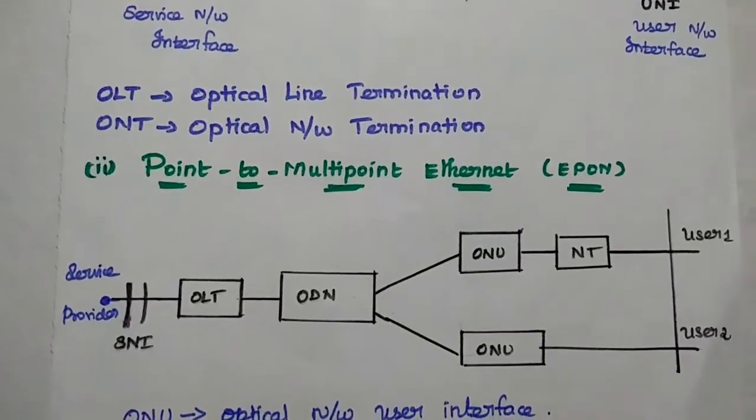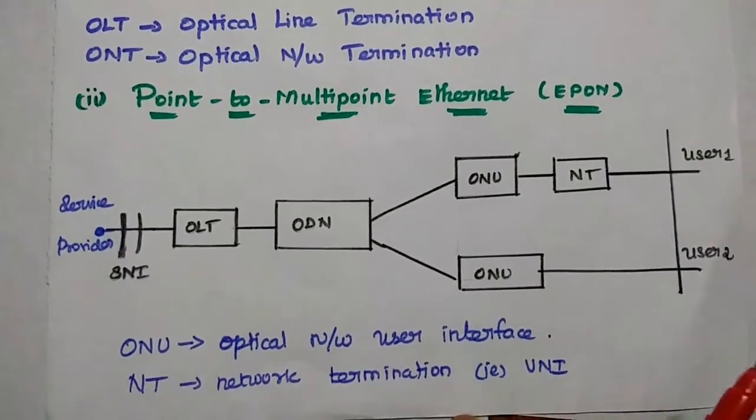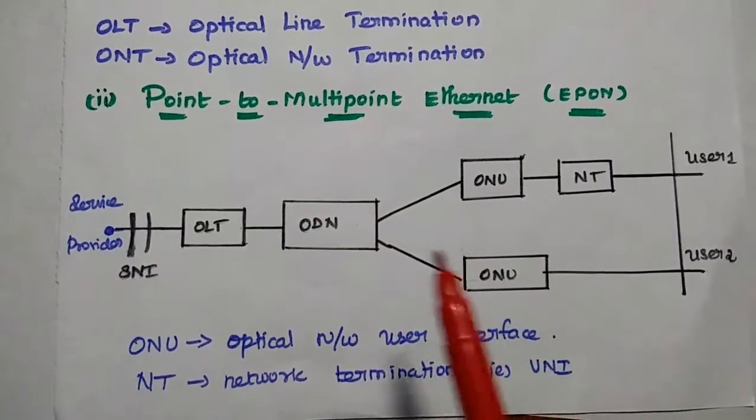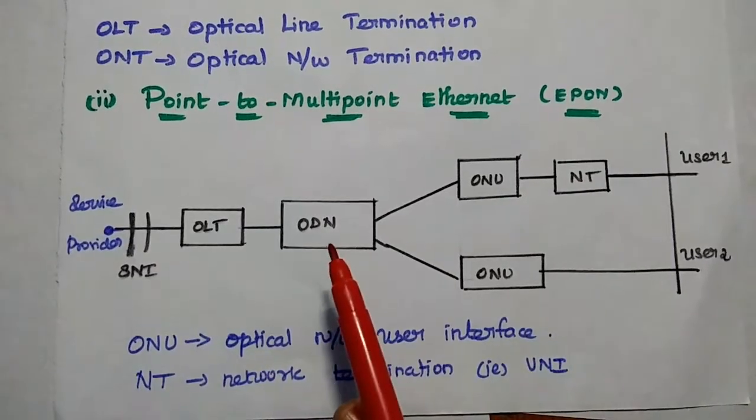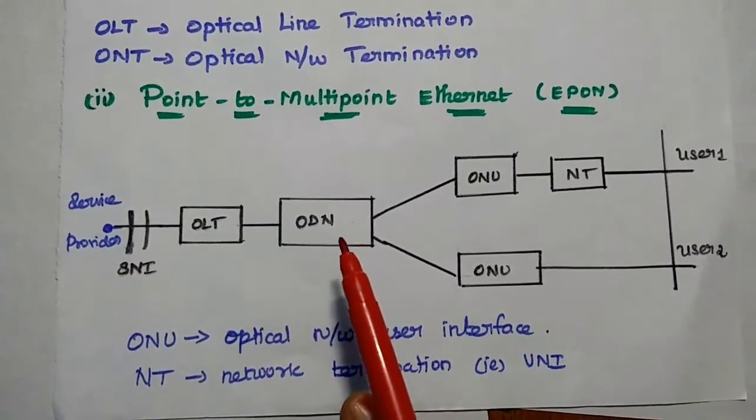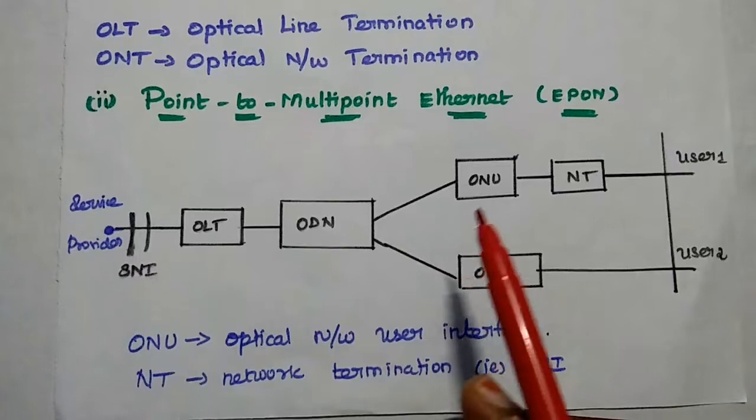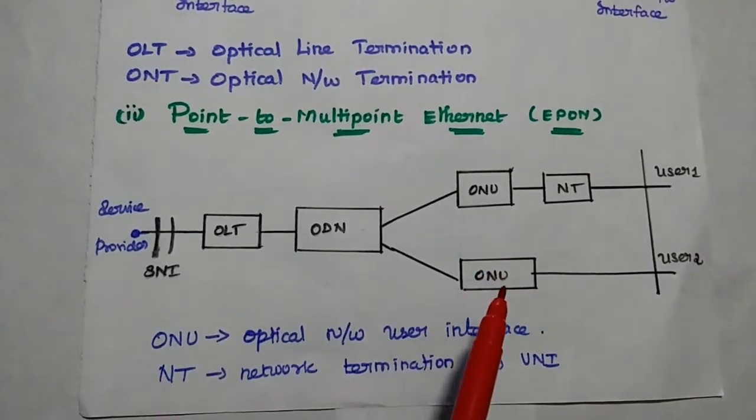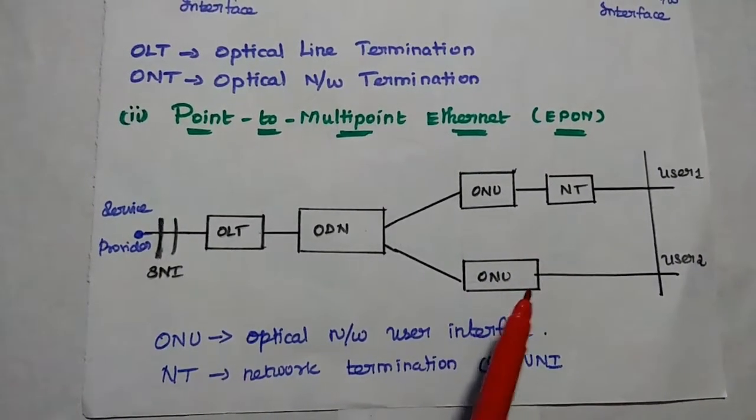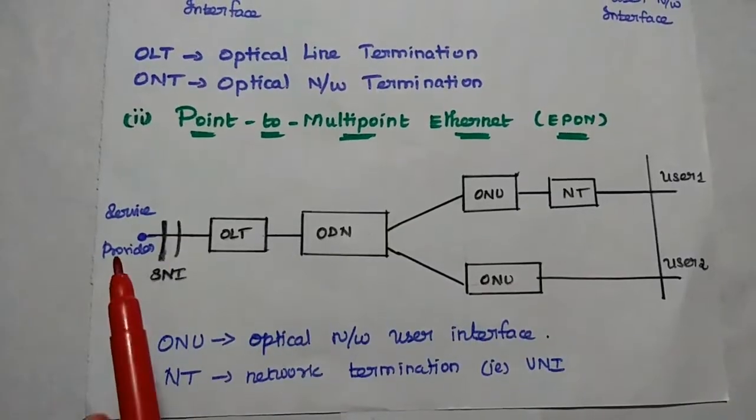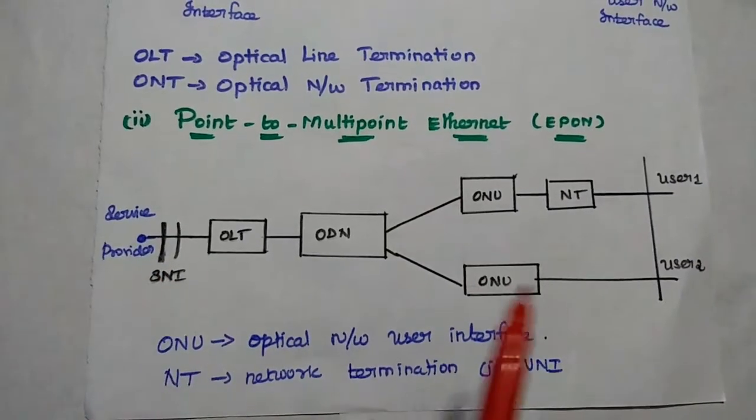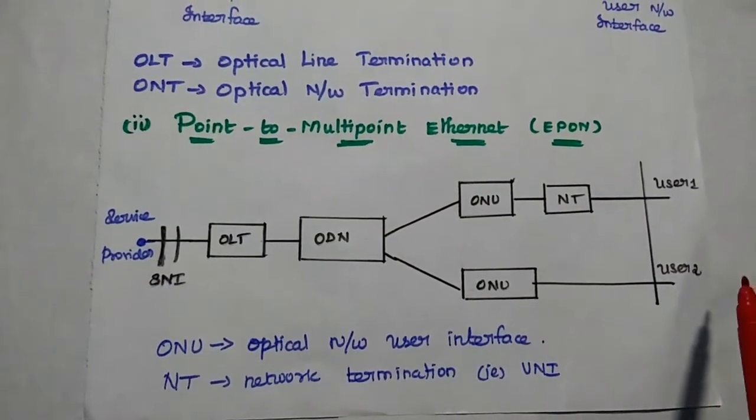User network interface is connecting this ONT with the user location. This is point to point link. Next one is point to multipoint Ethernet. That is also called as EPON. In this one, a single ODN, that is optical distribution node, is used to connect multiple ONUs, that is optical network user interfaces. Single service provider can connect multiple users.